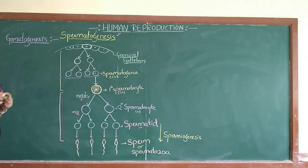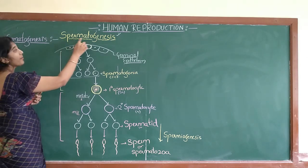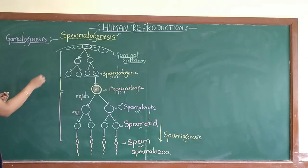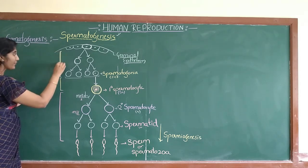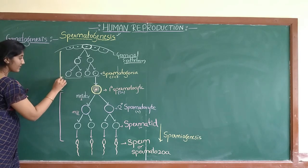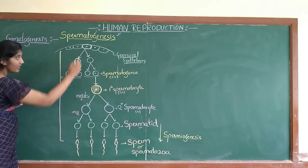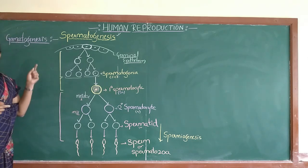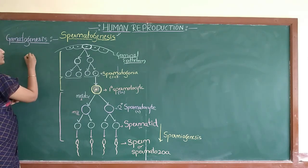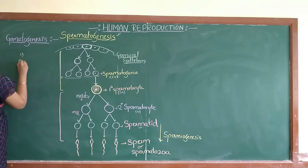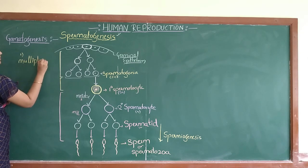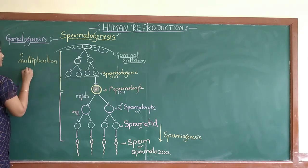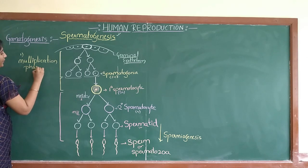Spermatogenesis is the process of formation of sperm in the seminiferous tubule. The whole process is studied in three phases: the first phase, the second phase, and the third phase.